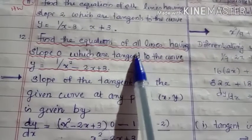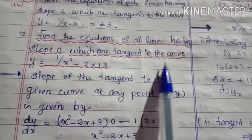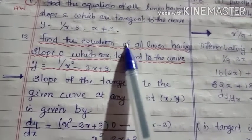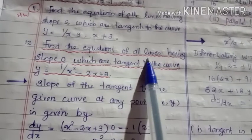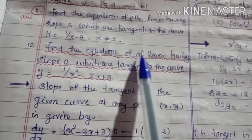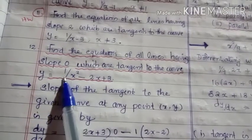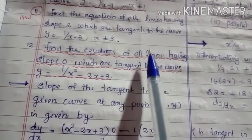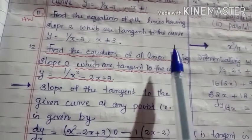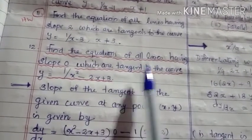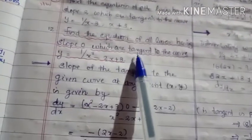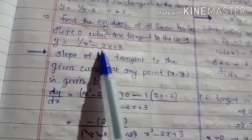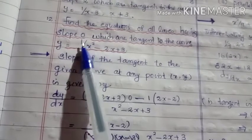Find the equation of all lines having slope 0 which are tangent to the curve y = 1/(x² − 2x + 3). Here the question asks us to find the equation of all lines having slope 0 and which are tangent to the curve y = 1/(x² − 2x + 3). We need to find the equation of a line satisfying the condition that it has slope 0 and is tangent to the given curve.